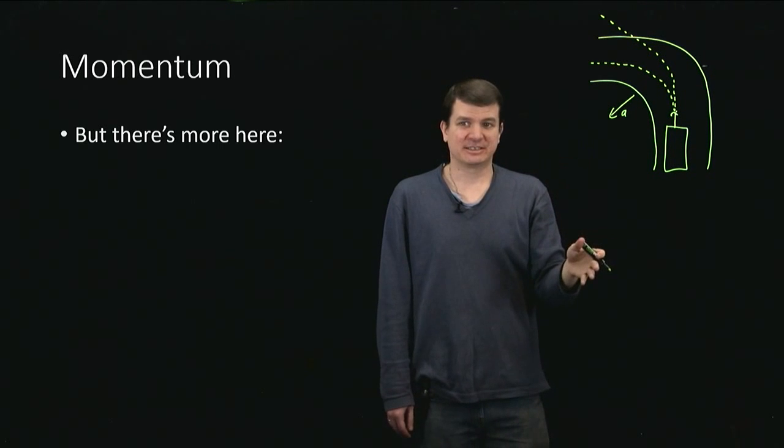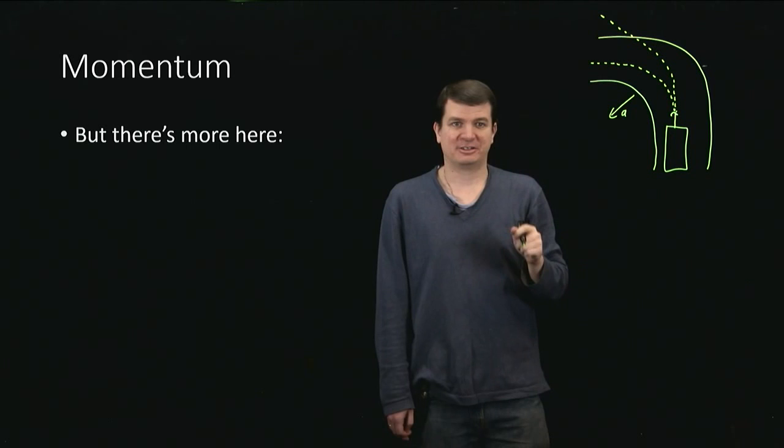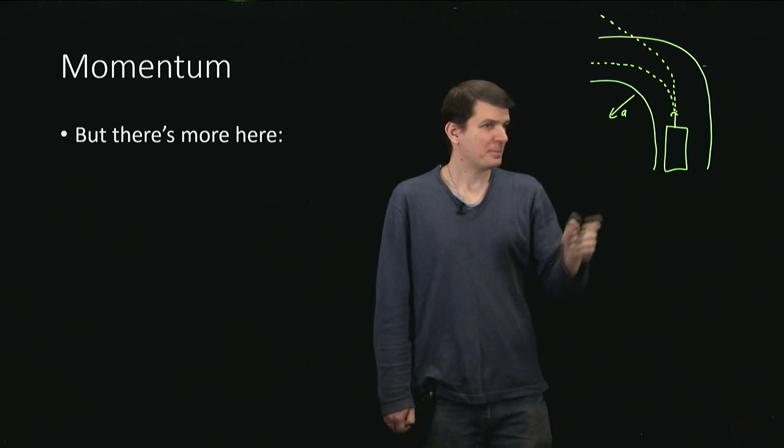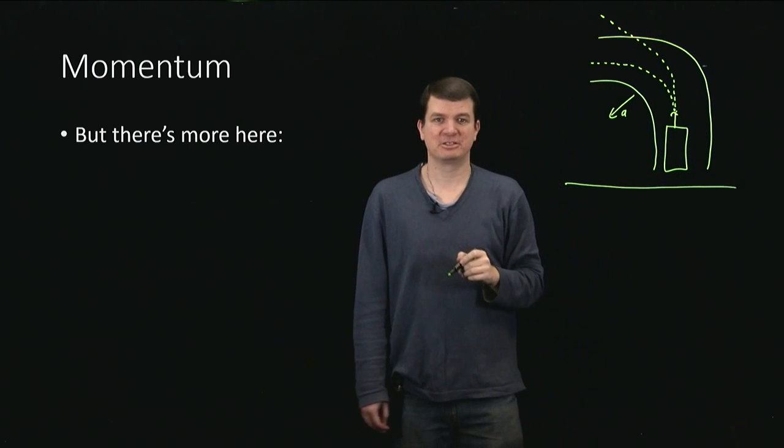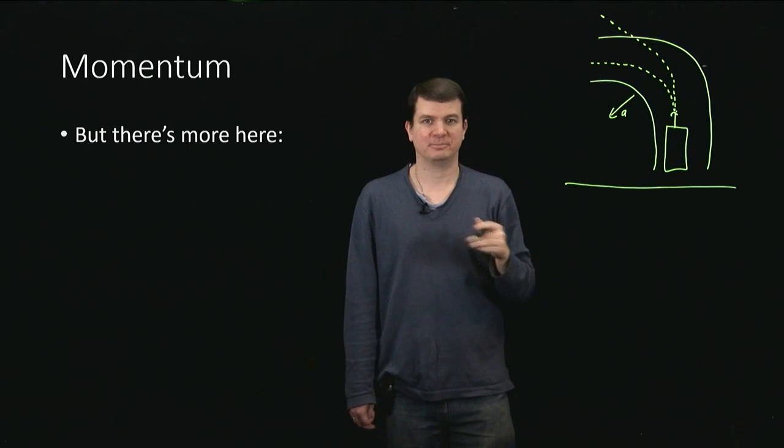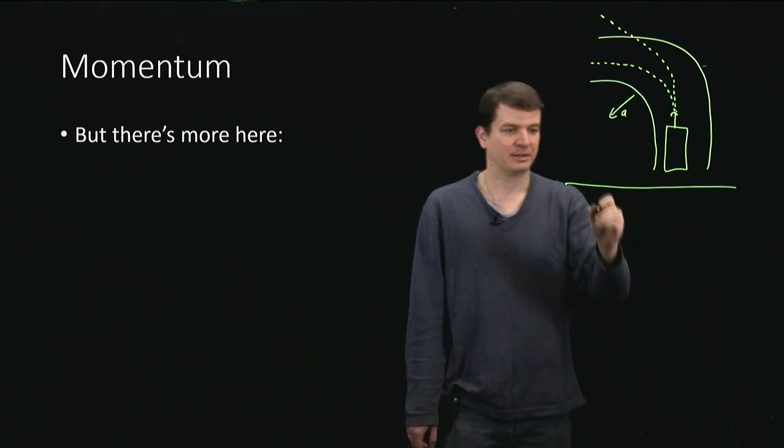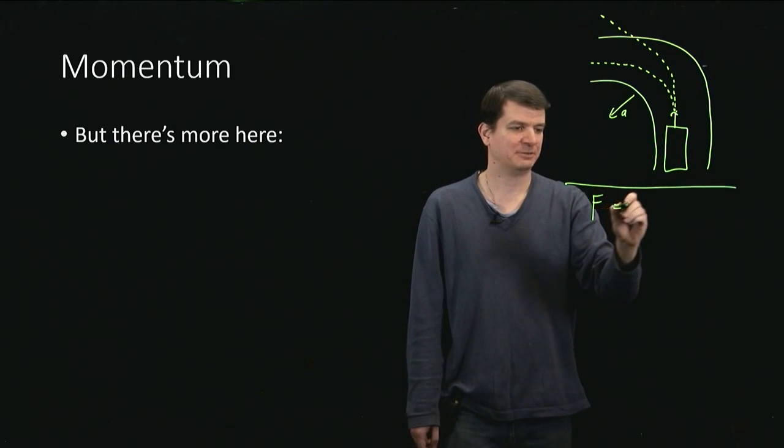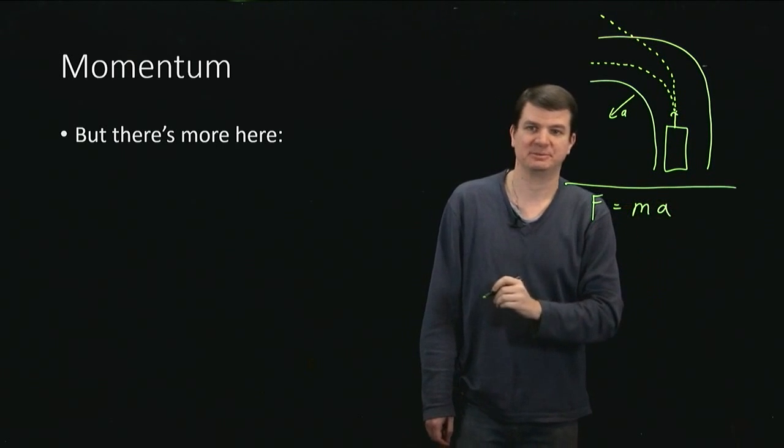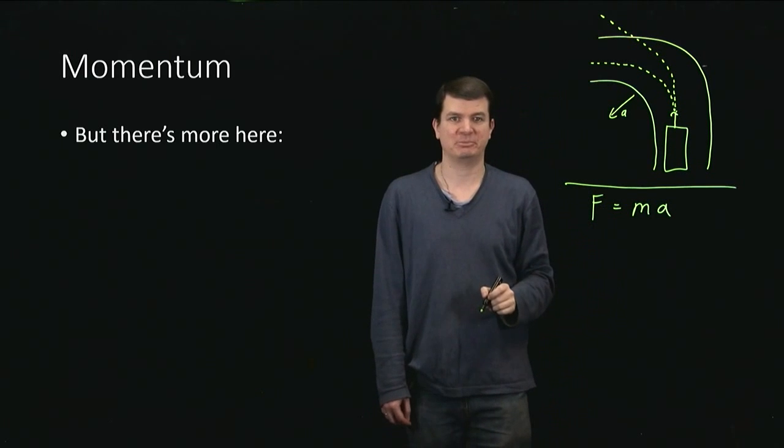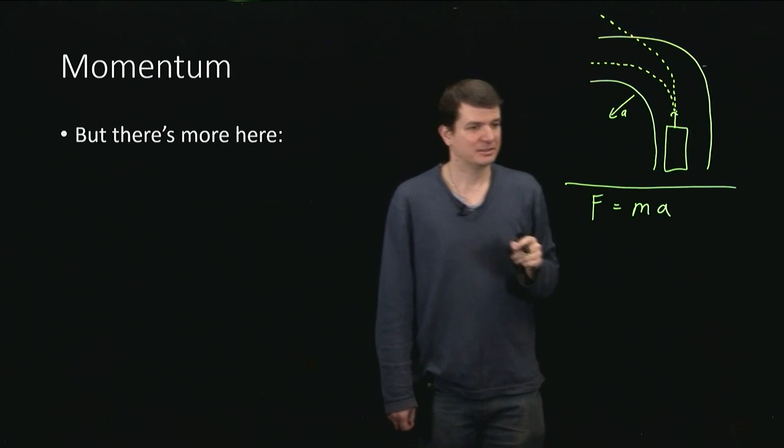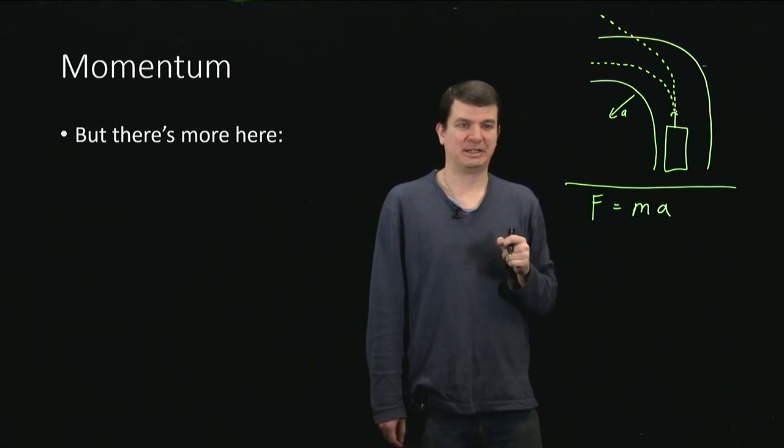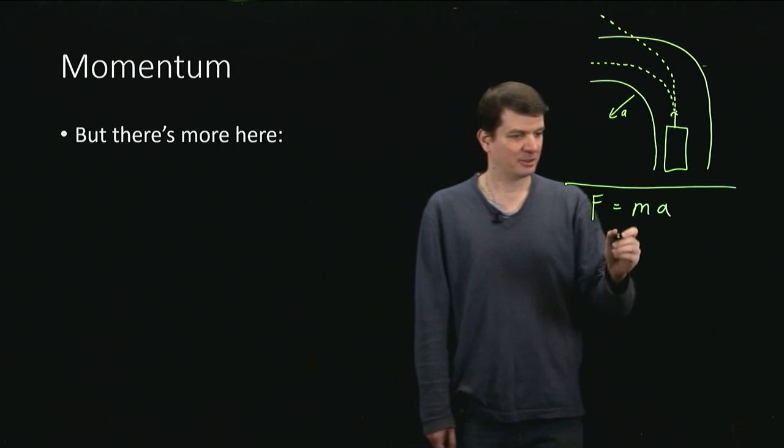So velocity of the car also matters. Now, this may seem kind of shocking, but this information is actually hidden inside our previous answer. So we said F equals ma provides us with the entire description of the motion. And now we're saying, oh, but you need to know something about the velocity. So how is that actually going to be consistent?